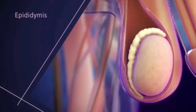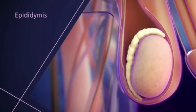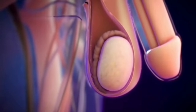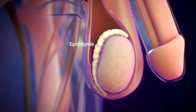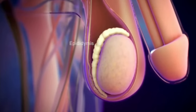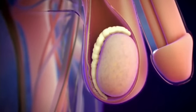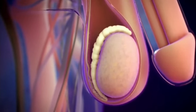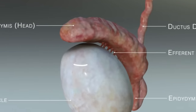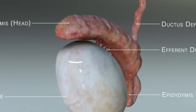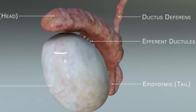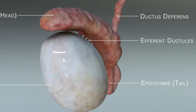The epididymis is a whitish mass of tightly coiled tubes curved against the testicles. It acts as a storage place for sperm before they enter the vas deferens, which is a tube that carries sperm from the testis to the urethra.